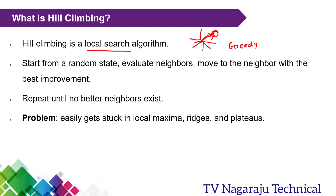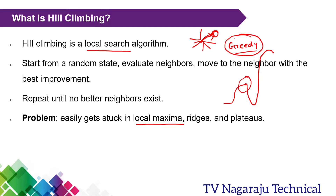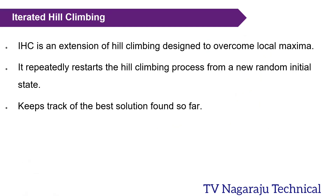This is simply a greedy approach — at each state, if there is an improvement it moves; if there is no improvement it stops. The most important problem is the local maximum. For example, moving along the search space, we reach a local maximum point that is the best compared to its neighbors, but there may be a global maximum further ahead. Because we always move based on the best neighbor greedily, we get stuck at this local maximum.